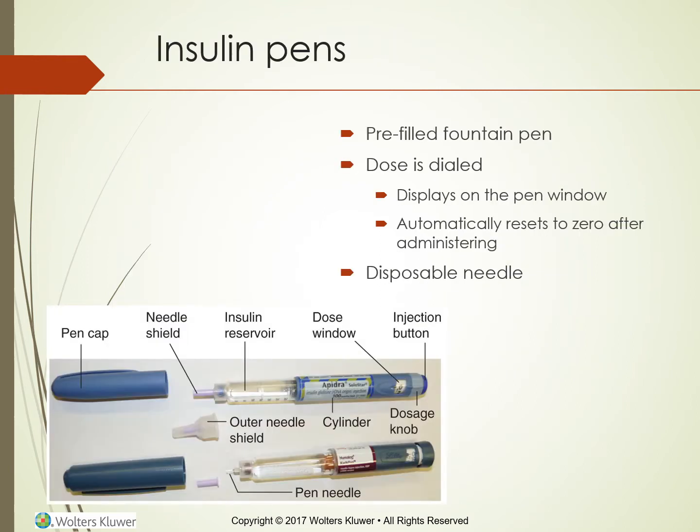Insulin pens look like a pre-filled fountain pen. The dose is dialed in and displays on the pen window. They automatically reset to zero after administering. The needle portion is disposable — not the fountain pen part, just the needle. You can see the needle shield, insulin reservoir, dose window, and injection button.